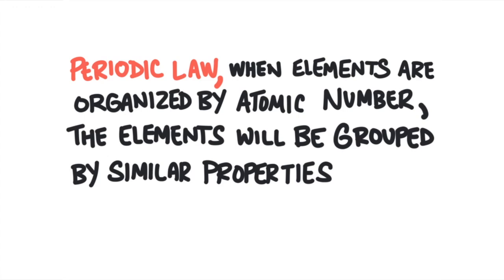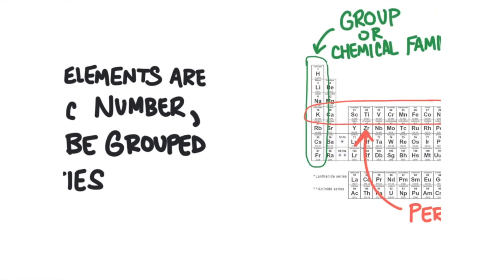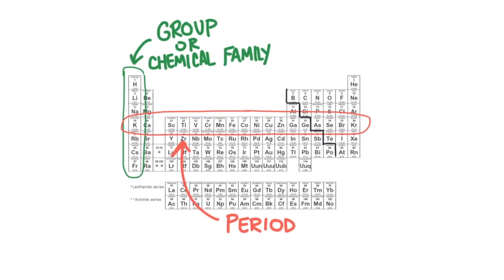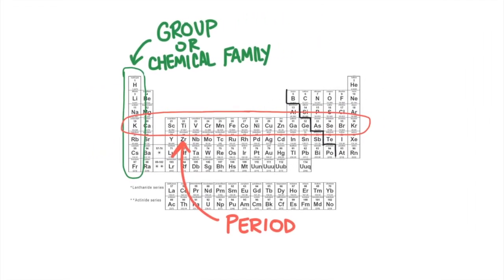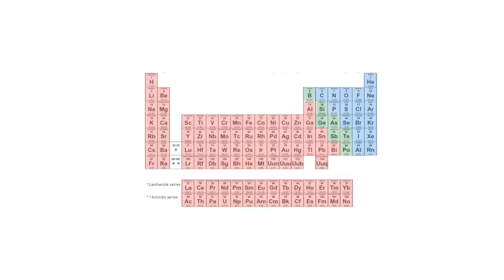The modern periodic table has nice neat rows and columns. The columns are called groups or chemical families, and the rows are called periods. The modern periodic table has been arranged so that elements are grouped into families. There are three broad families or categories of elements, and then there are five more specific families that we're going to learn.